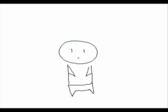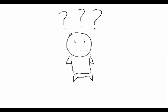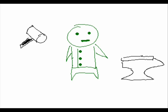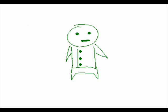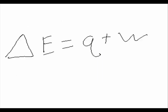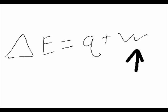Another important concept to understand is relating delta E to heat. You must recall the first law of thermodynamics — the universal truth that energy can neither be created nor destroyed. Energy lost by the system must be gained by the surroundings, and vice versa. The classic equation for relating delta E to heat and work is delta E equals Q plus W, where delta E is the change in internal energy, Q is the heat added or liberated from the system, and W is the work done on or by the system.